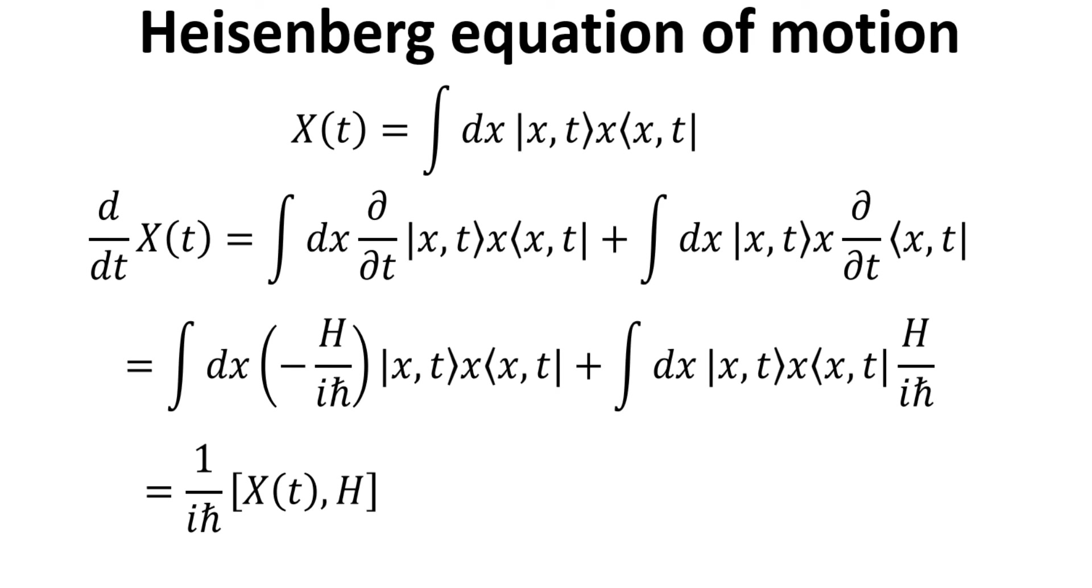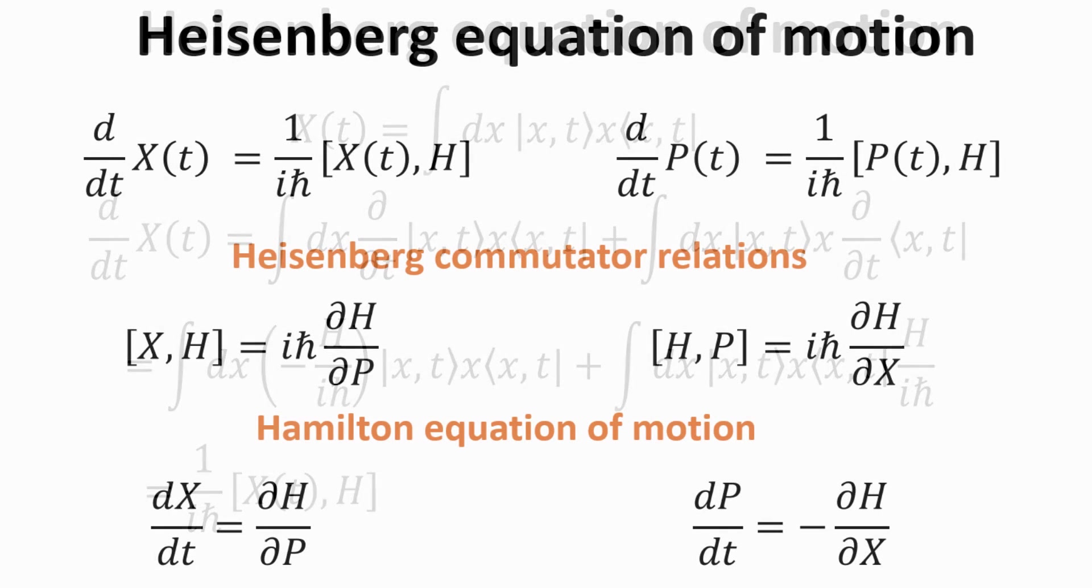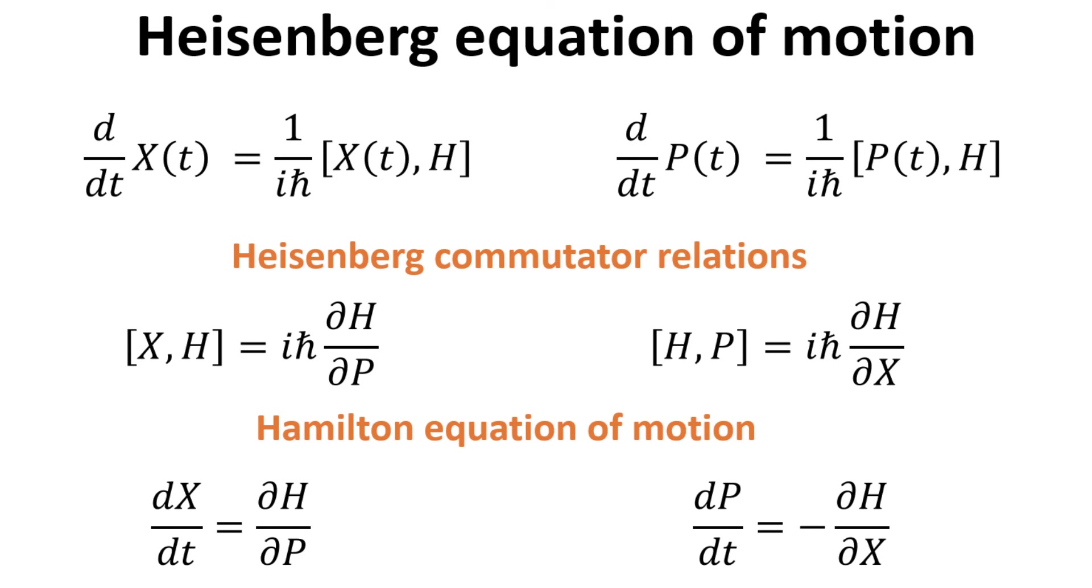This equation is known as the Heisenberg equation of motion. Analogous equations can also be derived for the momentum operator. To summarize, we have derived the Heisenberg equation of motion for the x and p operators.